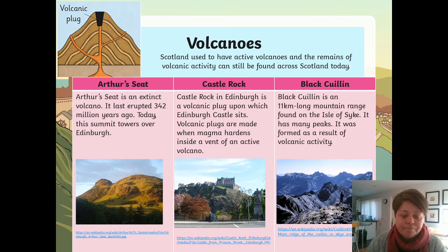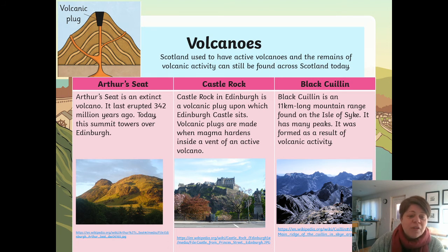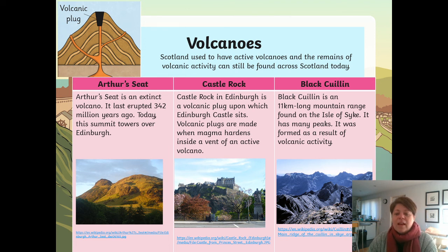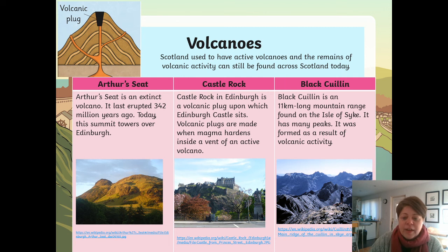Scotland used to have active volcanoes and the remains of volcanic activity can still be found across Scotland today. Arthur's Seat is an extinct volcano — it last erupted 342 million years ago, and today its summit towers over Edinburgh. Castle Rock in Edinburgh is a volcanic plug upon which Edinburgh Castle sits; volcanic plugs are made when magma hardens inside the vent of an active volcano. The Black Cuillin is an 11km long mountain range found on the Isle of Skye — it has many peaks and was formed as a result of volcanic activity.